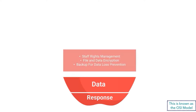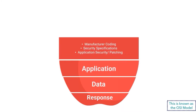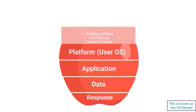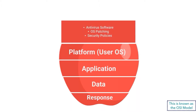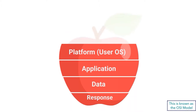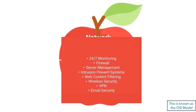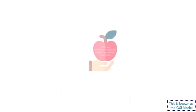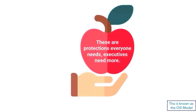This is layered with Application, which includes manufacturer coding, security specifications and application security or patching. Followed by your Platform or user operating system, which includes your antivirus software, OS patching and security policies. And then to top it all off, you have your Network security — that is your 24/7 monitoring, firewalls, server management, and intrusion prevention system. These are all protections that everyone needs, but executives need more because we have more access to more sensitive data.